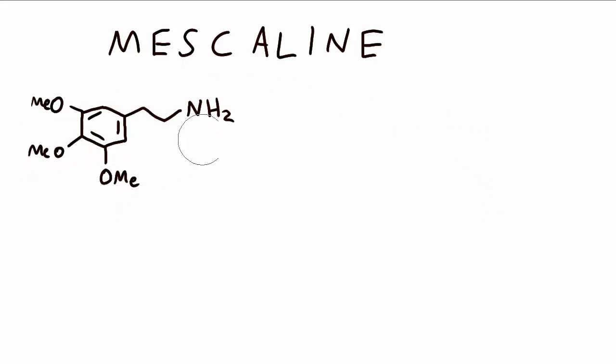So mescaline is really the grandfather of all of the rest of the psychedelic phenethylamines, and this structure inspired Alexander Shulgin to make a number of modifications that improved its potency.